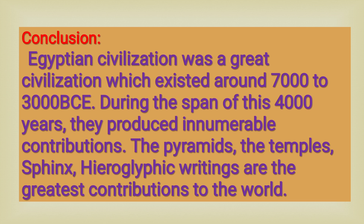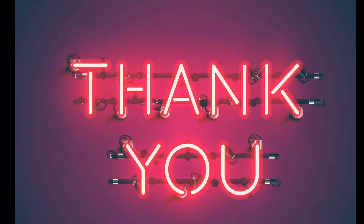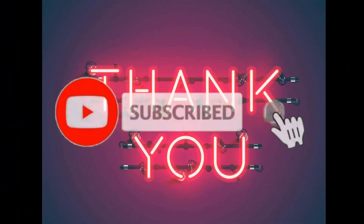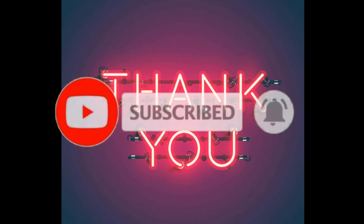Conclusion: Egyptian civilization was a great civilization which existed around 7000 to 3000 BCE. During the span of these 4000 years, they produced innumerable contributions. The pyramids, temples, sphinx and hieroglyphic writings are the greatest contributions to the world. Dear students, here I stop my explanations on 5-marks and 10-marks questions of Egyptian civilization. Don't forget to subscribe and click the bell button for further notifications. Thank you all.